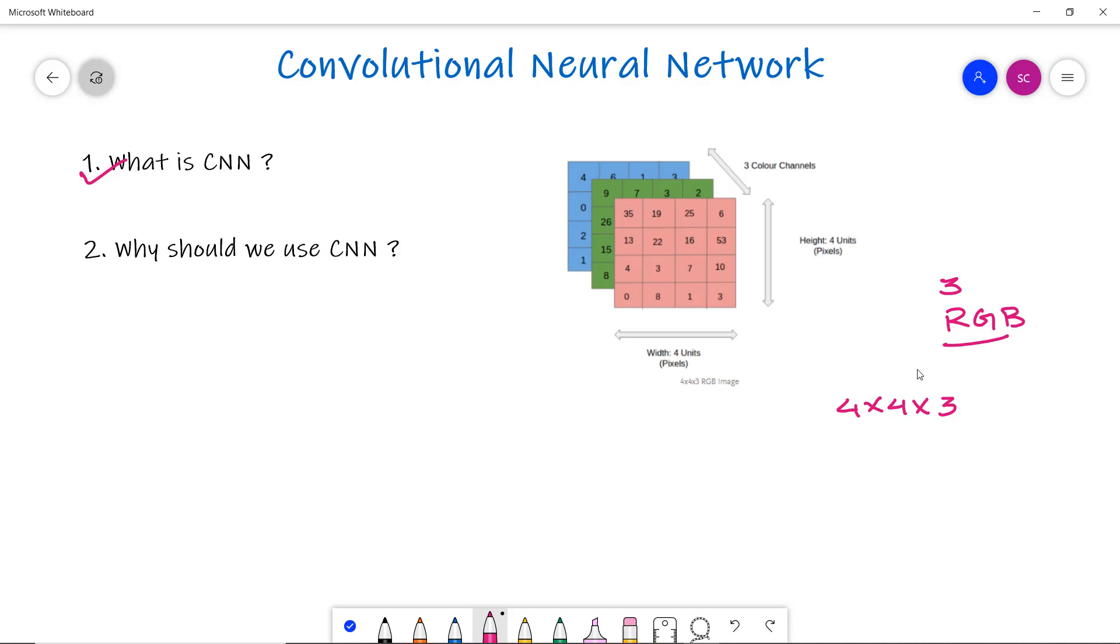If we have a grayscale image, the channel will be two. Now we come to the next question: why do we use CNN? Previously we had the feed-forward neural network.